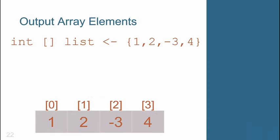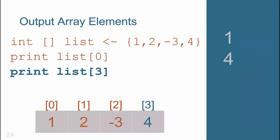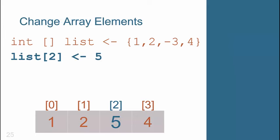To output elements from an array, use the same indexing process mentioned before, as you can see with these examples. To change array elements, again, use the indexing process to make the desired assignment.